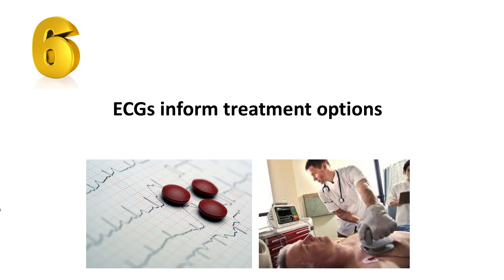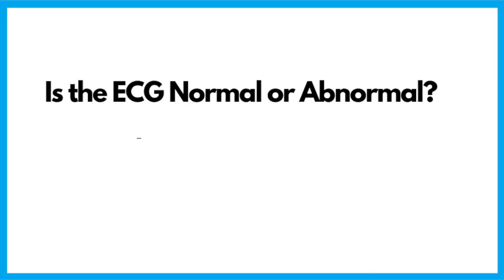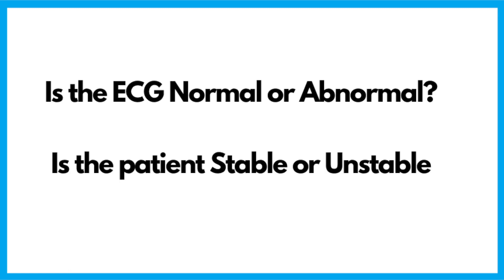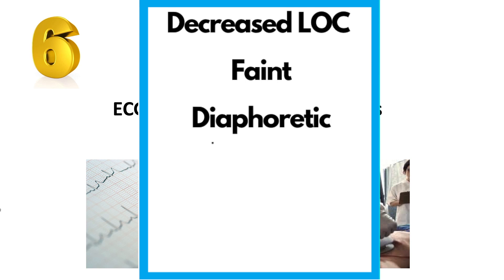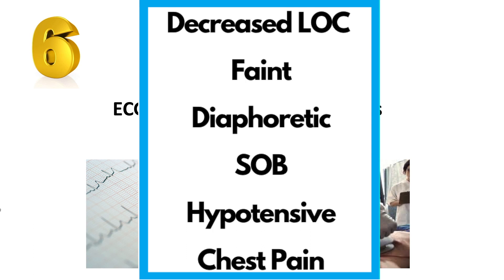Number six: ECGs inform treatment options. There are two questions to ask when looking at an ECG: is the ECG normal or abnormal, and is the patient stable or unstable? Signs and symptoms of an unstable patient relate to decreased cardiac output and can include decreased level of consciousness, confusion, feeling faint, diaphoresis, shortness of breath, low blood pressure, chest pain, and at its worst the patient is pulseless.